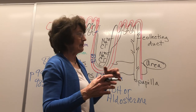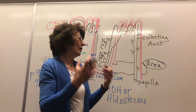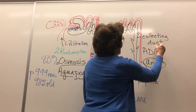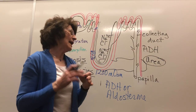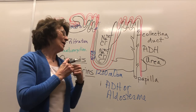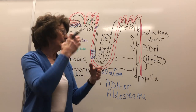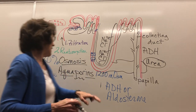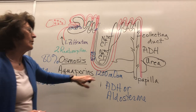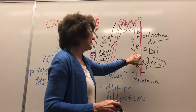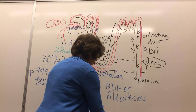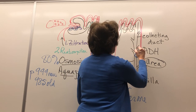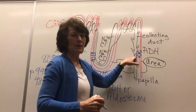The collecting duct determines whether you need to save water or let water go out in the urine. Over on this side, you've got ADH. When we think of antidiuretic hormone — it retains water. If it were a diuretic hormone, it would let lots of water out. But ADH retains water by the use of aquaporins, which are inserted here in the collecting duct.